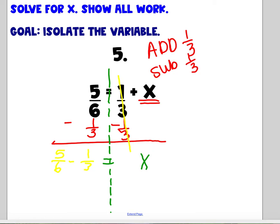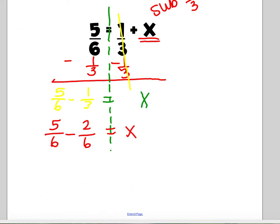Don't be scared of the fractions. You need common denominators. 5 sixths minus, let's make 1 third into sixths. It's equivalent to 2 sixths is equal to x. 5 sixths minus 2 sixths is 3 sixths is equal to x. And yes, always simplify. Create your equivalent fraction. x is equal to 1 half.